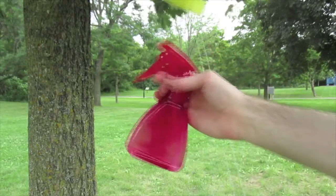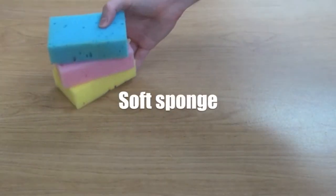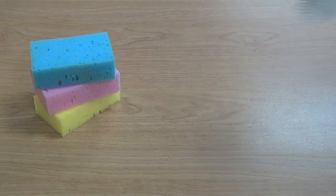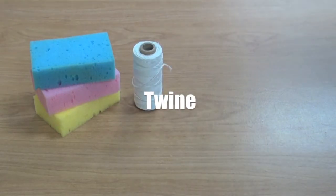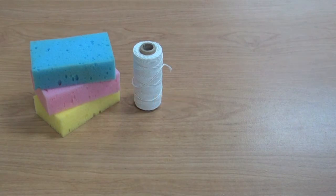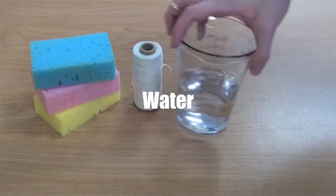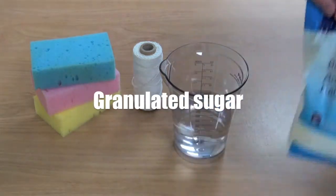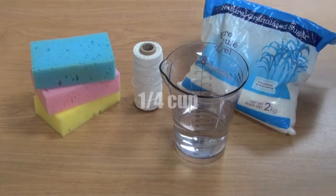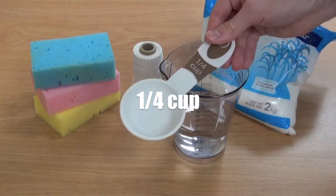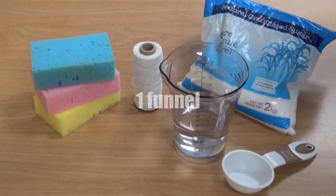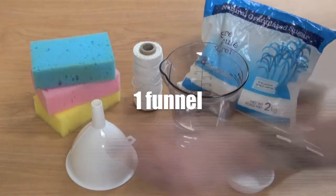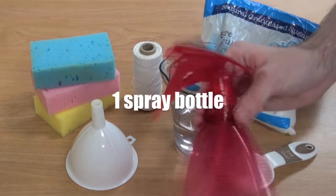The first of our three activities is a butterfly feeder using our own homemade nectar. For this project you will need soft sponges, twine, water, granulated sugar, a one-fourth cup, a funnel, and a spray bottle.